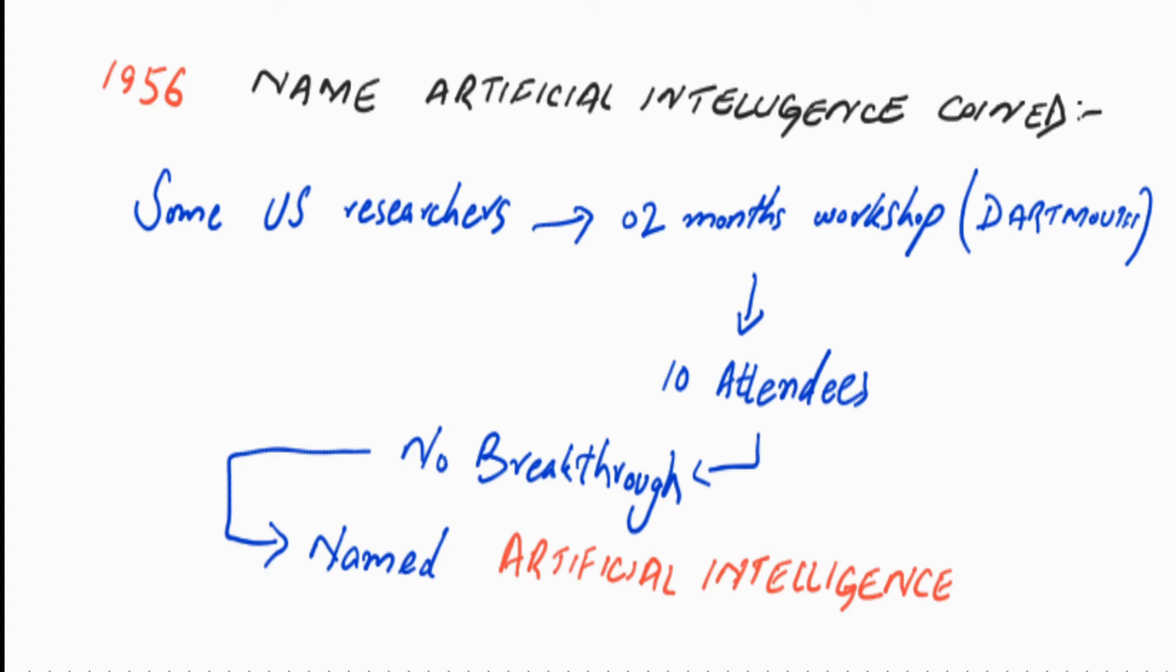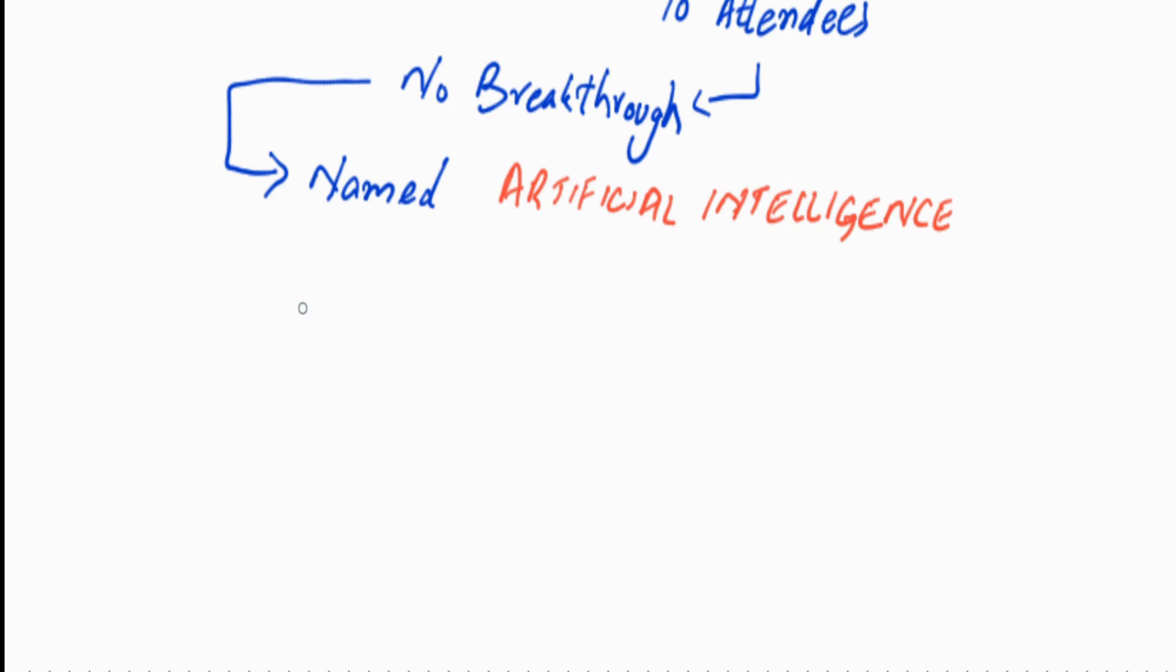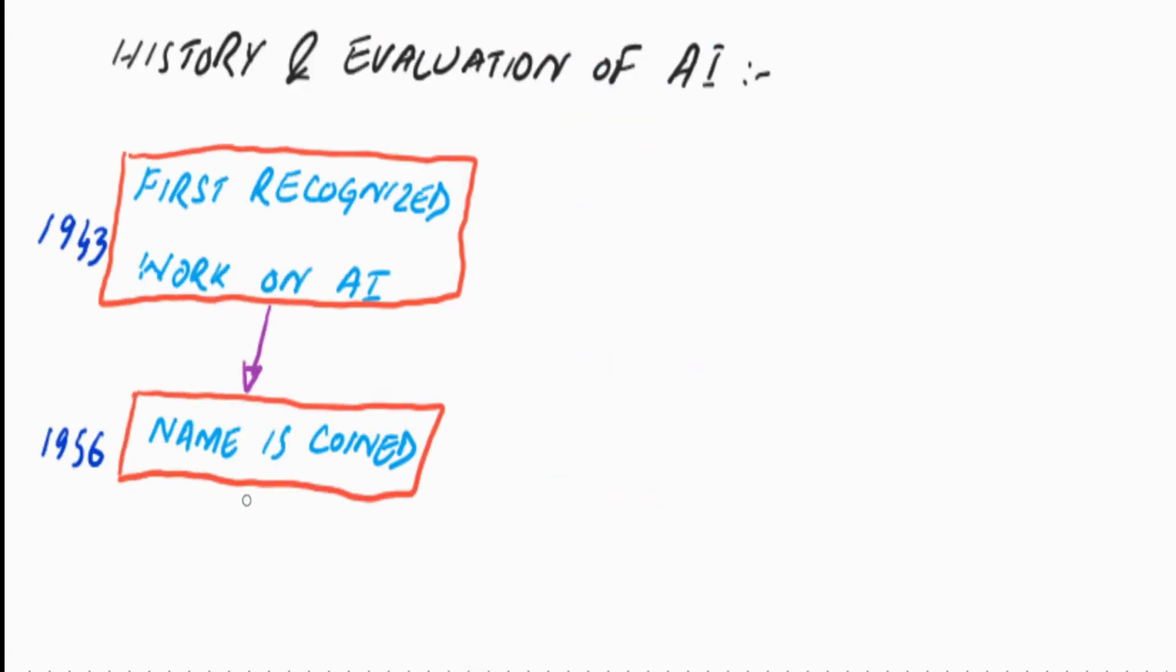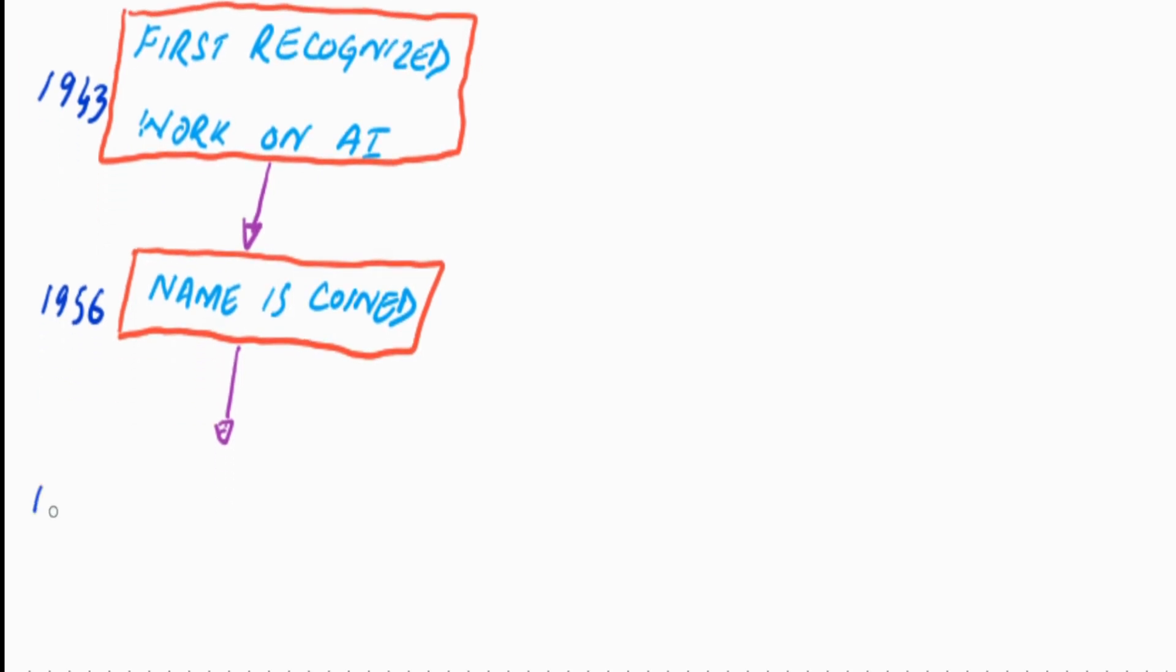In the early years, artificial intelligence met drastic success. Newell and Simon's early success was followed up with the first program that thought humanly, a general problem solver. After that, in 1958, an artificial intelligence programming language Lisp was developed.